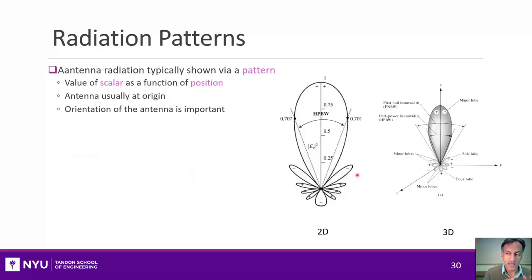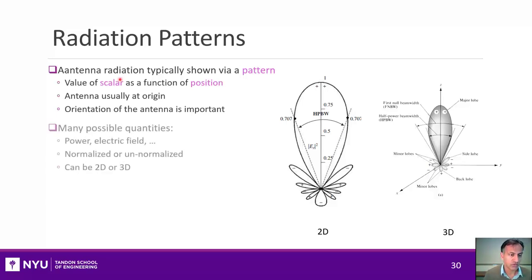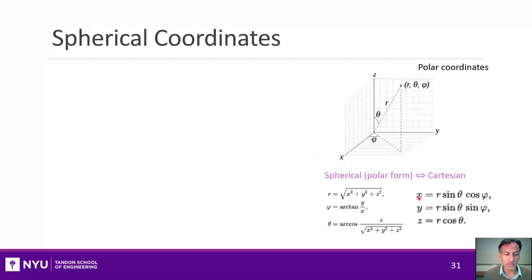With the idea of antennas defined, let's talk about radiation patterns. A radiation pattern for an antenna is a graphical way to represent the value of any scalar function of the radiation of that antenna as a function of position. Typically you place the antenna at the origin. Examples include the power of the antenna or the magnitude squared of the electric field, and it could be normalized or unnormalized, 2D or 3D.